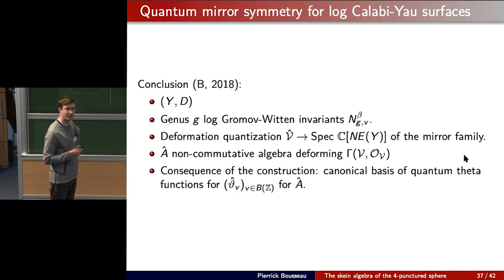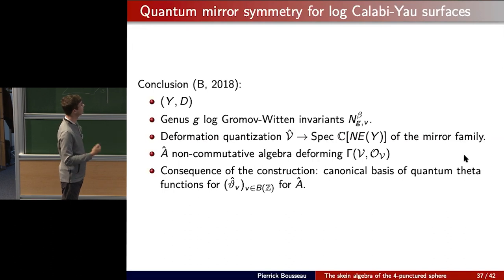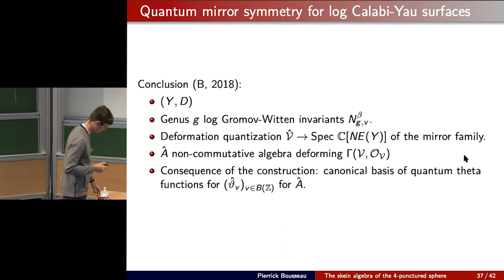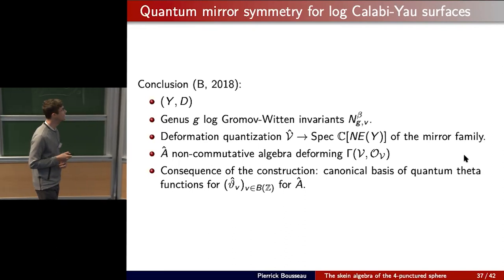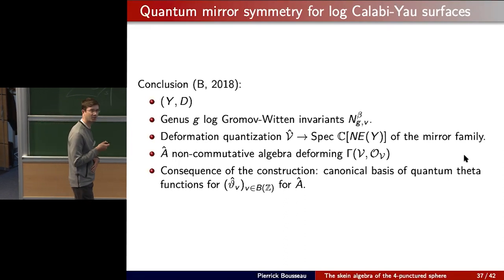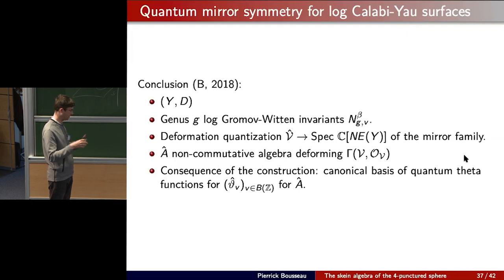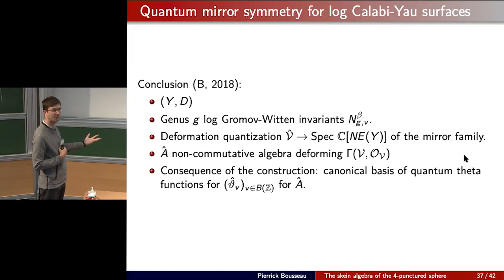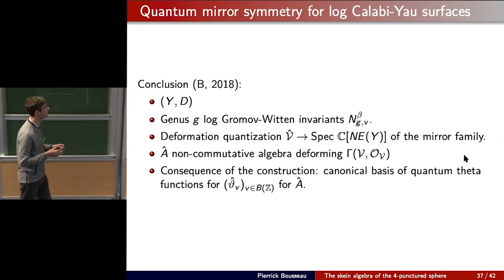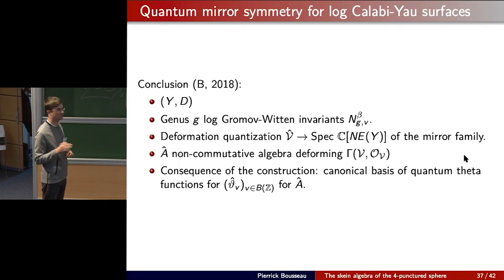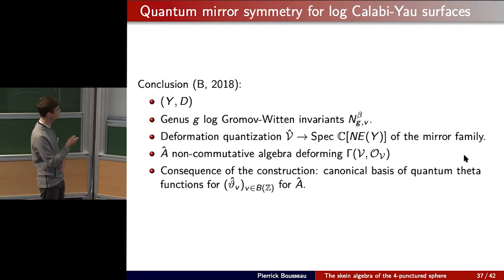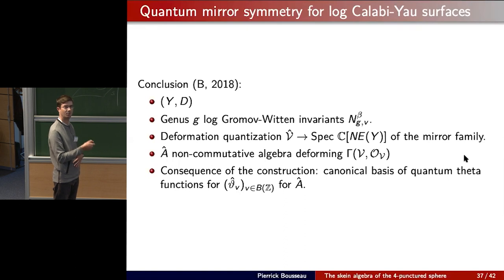The question of why this produces an associative algebra and why going to higher genus introduces non-commutativity is non-trivial. Even in the classical case, the rational curve counts fit together to produce a commutative associative algebra in a non-obvious way that requires proof. The higher-genus analogue — showing the result is still associative but now non-commutative — is even more so. I will not explain this here; it is taken as a black box in some sense.